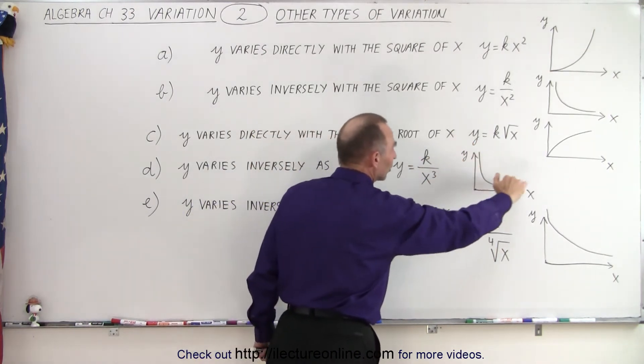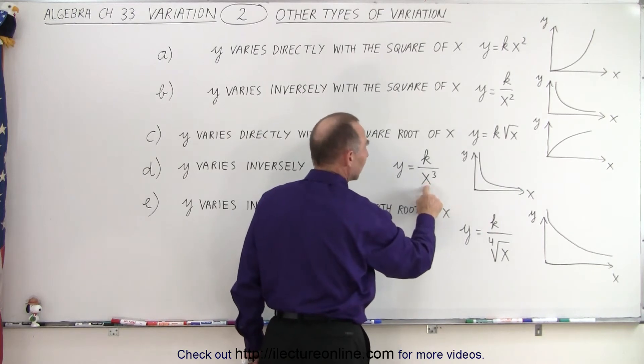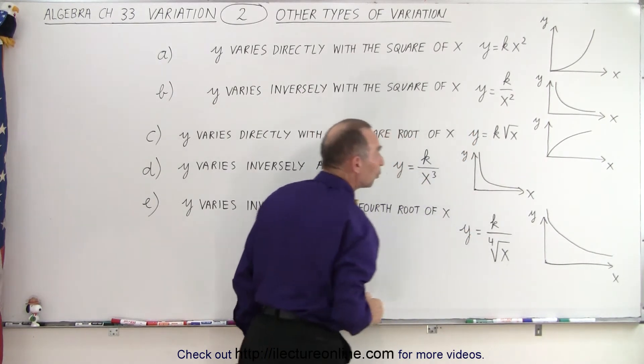And that means that our graph will kind of look like this. And notice as X gets big, since it's cubed, the denominator will get really big and Y will get small really fast.